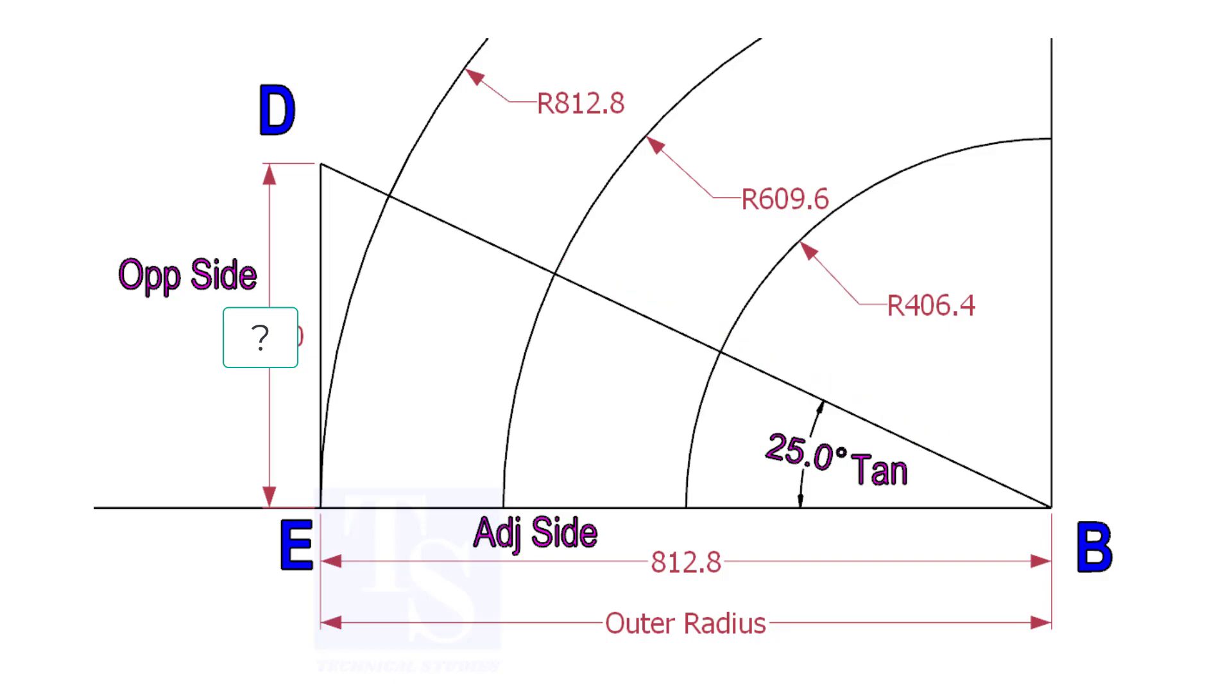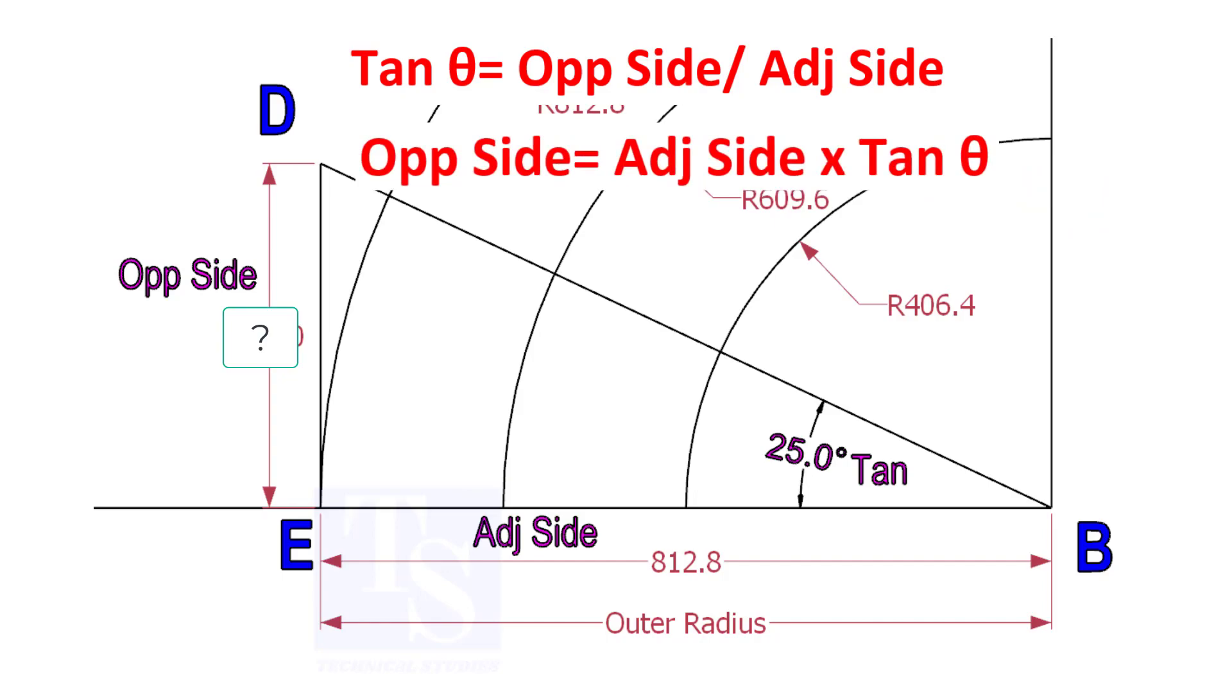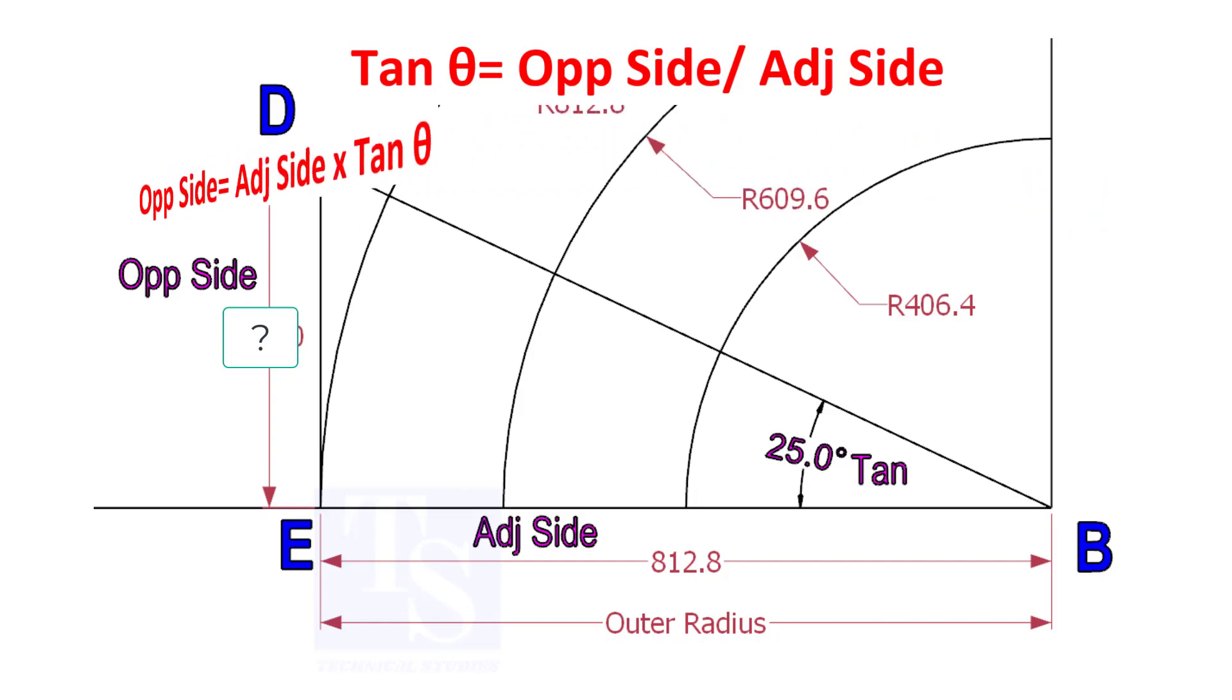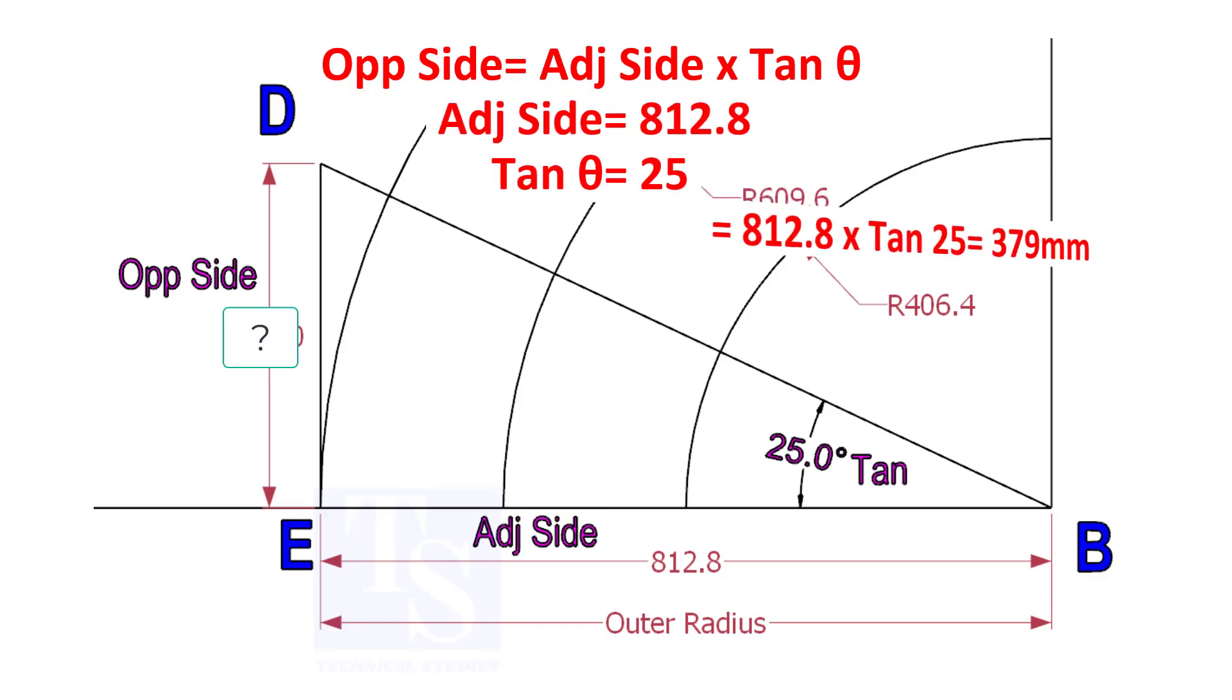To draw the line DB, we need to know the length of the line ED. To calculate ED, we need to apply the formula: tan-theta equals opposite side divided by adjacent side. Opposite side equals adjacent side multiplied by tan-theta. 812.8 into tan-25 equals 379 millimeters.